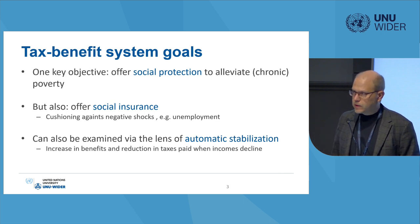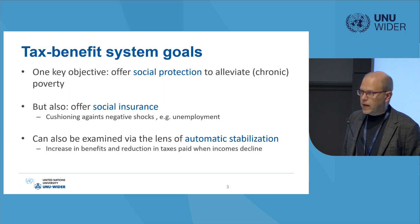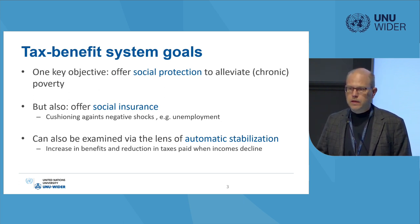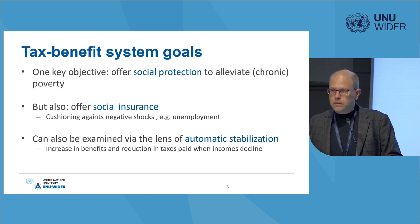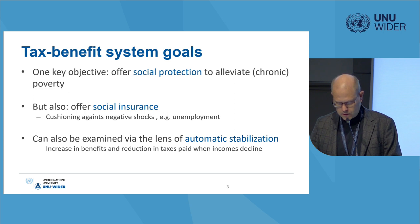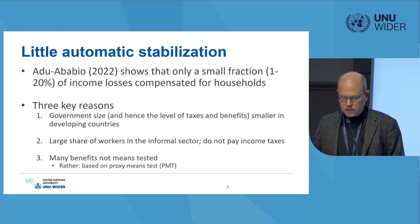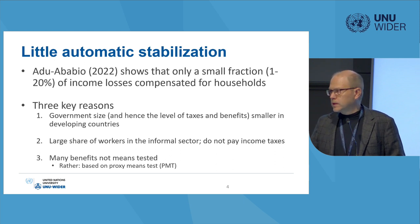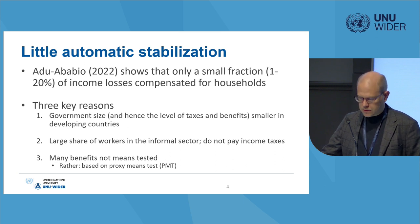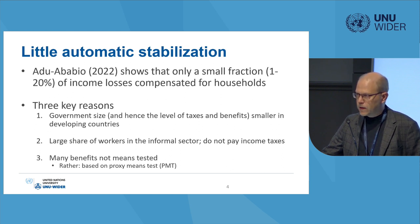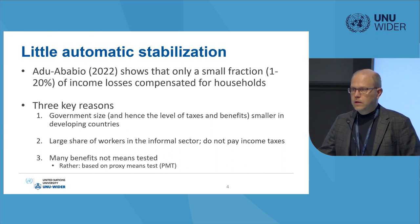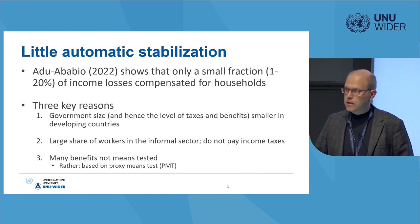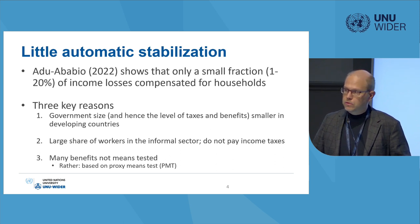This can also be examined through the lens of so-called automatic stabilization — the automatic increase in benefits and reduction in taxes when people's incomes decline. A colleague at WIDER and the University of Helsinki has a paper on automatic stabilization for developing countries, finding that the extent is very small in most low and lower-middle-income countries, much smaller than in developed economies. Norway and Finland, for example, cushion something like 50% of income loss, whereas Ghana provides an order of magnitude less.